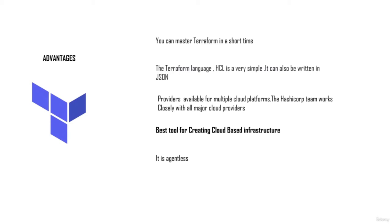The third advantage is that Terraform has providers for all the cloud platforms. HashiCorp works with major cloud providers including GCP, AWS, and Azure, and these providers enable Terraform to communicate with those cloud vendors to create architecture. These cloud providers have a close collaboration with HashiCorp to create the Terraform providers for their respective platforms. It is arguably the best tool for creating cloud-based infrastructure, and it is also agentless.